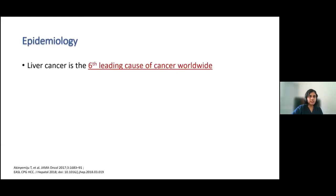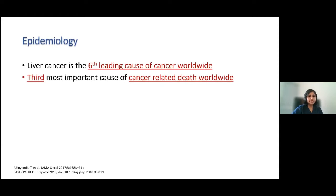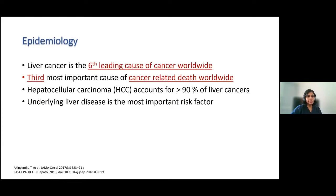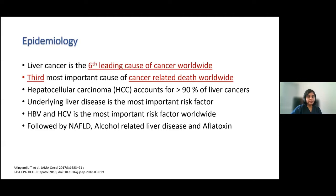With regards to epidemiology, liver cancer is the sixth leading cause of cancer worldwide and it is the third most important cause of cancer-related death worldwide. HCC, hepatocellular carcinoma, accounts for more than 90 percent of primary liver cancers and underlying liver disease is the most important risk factor. Hepatitis B virus as well as hepatitis C virus are the most important risk factors worldwide, followed by NAFLD, which is probably more important in our setting, and alcohol-related liver disease as well as aflatoxin.